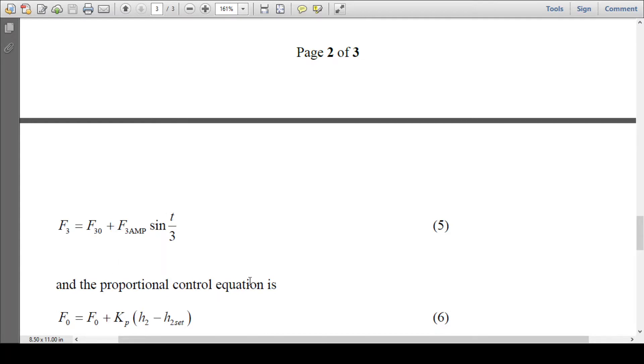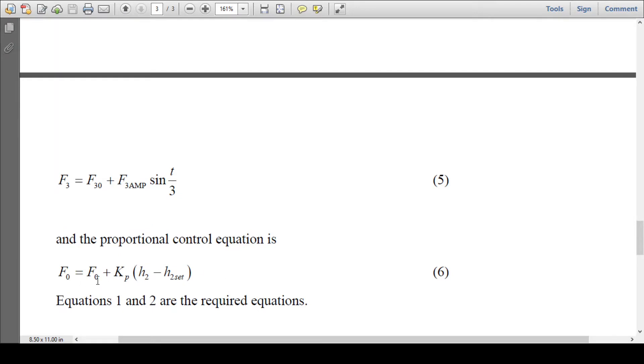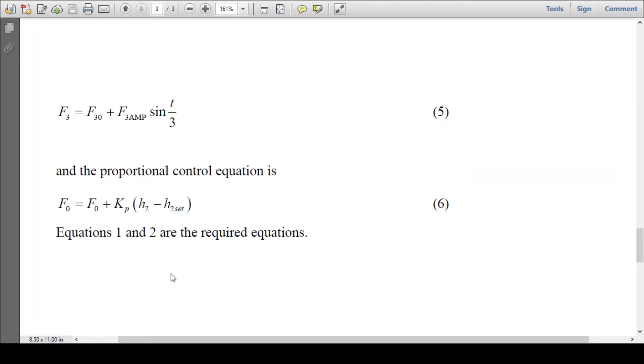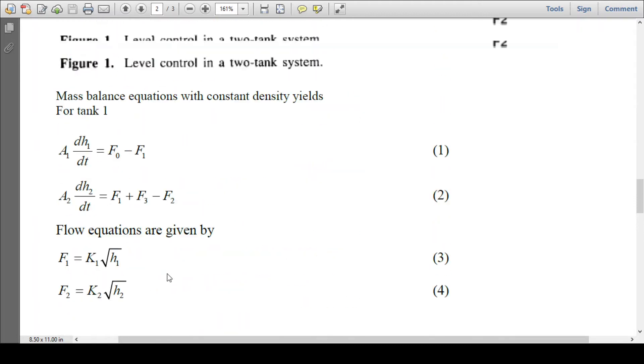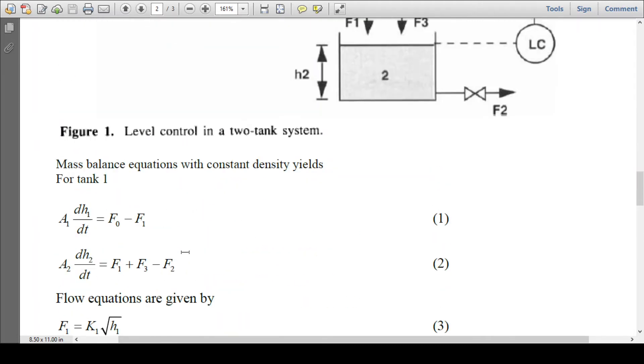And proportional control equation to control F0: F0 = F0_s + Kp(H2_set - H2). This will set how much disturbance should be in the controller at F0. And equations 1 and 2 are the desired model equations that can be solved to control the level in tank 1 and tank 2. Thank you.